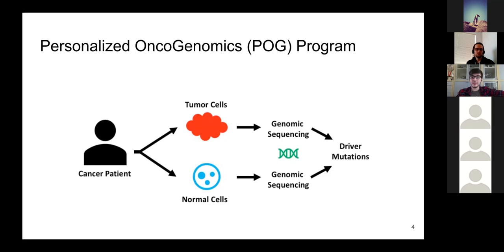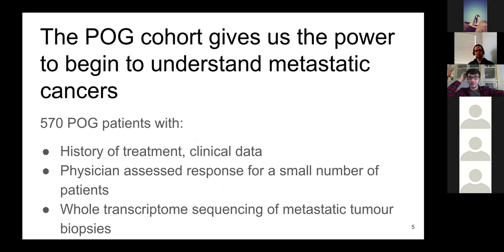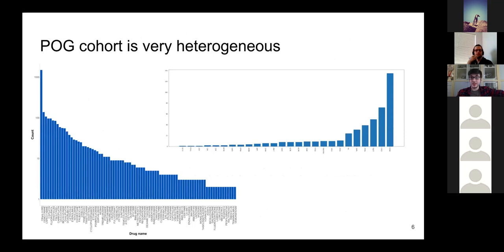This is a very unique dataset: 570 metastatic cancer patients with transcriptome and whole genome sequencing on metastatic tumors, as well as whole genome sequencing on liquid blood biopsies. There is physician-assessed response for a small number of patients, as well as treatment history before and after the biopsy. One difficulty is that the cohort is very heterogeneous — over 70 different drugs, patients often on multiple drugs simultaneously, and many different cancer types including breast, lung, and colorectal.